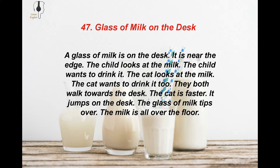A glass of milk is on the desk. It is near the edge. The child looks at the milk. The child wants to drink it. The cat looks at the milk. The cat wants to drink it too. They both walk towards the desk. The cat is faster. It jumps on the desk. The glass of milk tips over. The milk is all over the floor.